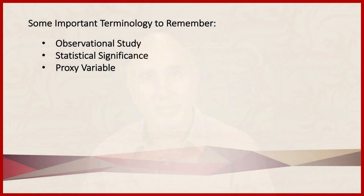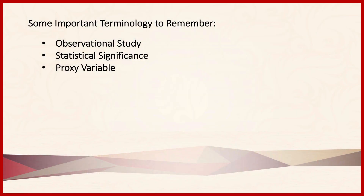We have some important terminology from this section to remember. First, we have the notion of an observational study. We can't always test causal relationships within a laboratory — sometimes it's not practical, other times it's not ethical — so we have to go out and observe things actually happening in the world. The second term is statistical significance: to say there's a statistically significant difference between two groups means there's less than a 5% chance that the difference between them is due to chance.